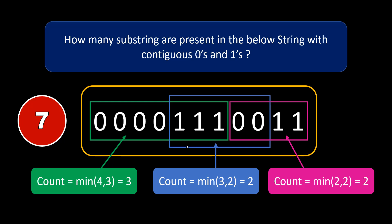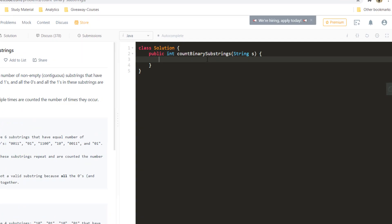So now we know what we need to do: find the number of groups, find the substrings each group is forming using the minimum formula, add all those counts into the main count, and return that count. Now that we know the approach, let's go and code it out.